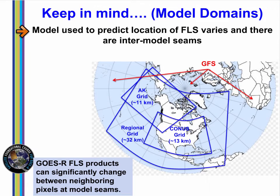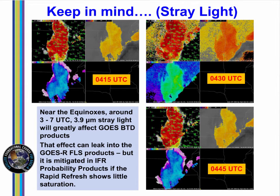Model data are provided by the Rapid Refresh, with domains and resolutions noted on this slide. GFS data are used outside of North America. There are differences along the model boundaries because model solutions will vary. Stray light issues occur around the equinoxes. They appear in brightness temperature difference products, and they leak into the IFR probability fields also.